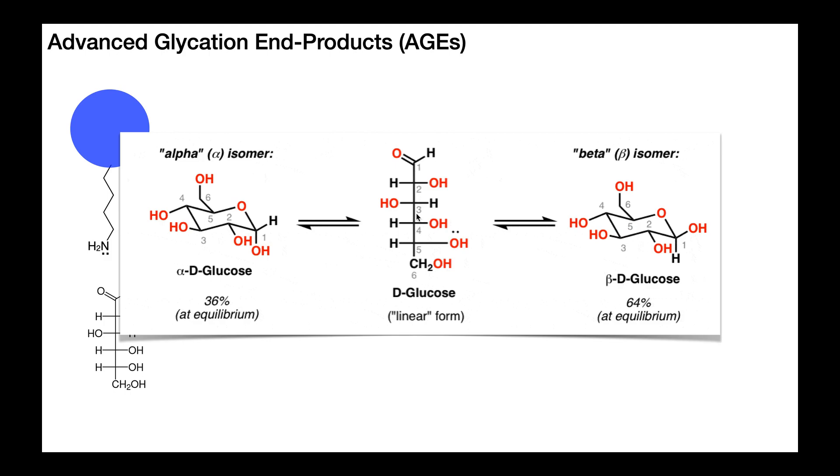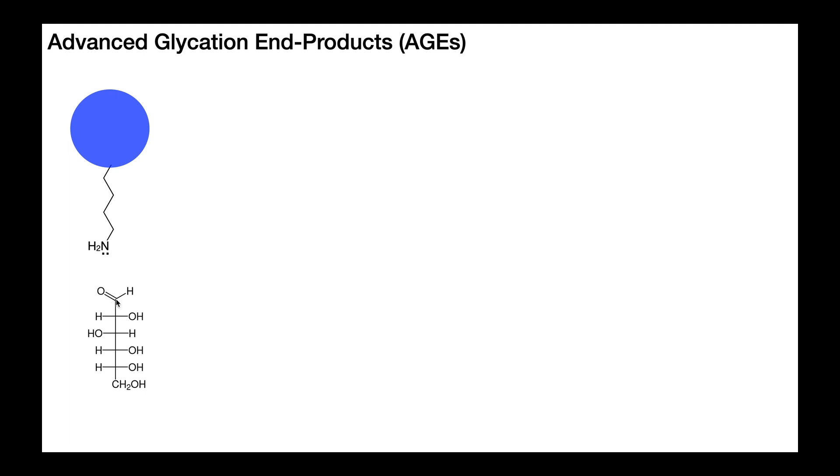But what you can see here is that the alpha form either converts with the beta form. The beta form constitutes about 64% of glucose in the blood at equilibrium, whereas the alpha form is 36%. But in order for the alpha form to convert to the beta form and vice versa, it has to move through this intermediate, meaning the cyclic form has to acyclize into the linear form and then recyclize back into the different cyclic form. And so to some extent, there's going to be a linear form of glucose in the blood. And it turns out that that linear form is a lot more reactive. Let's see what happens.